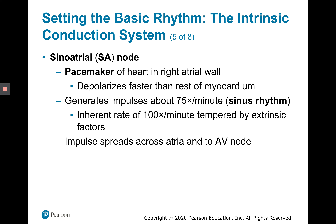What we mean by extrinsic factors is that the nervous system brings down the inherent rate a little bit. Without it, the SA node would fire at about 100 beats per minute. As we leave the SA node, the signal goes not only to the contractile cells but also to other pacemaker cells so they can spread the excitation further. So as we leave the SA node, the spontaneous depolarization moves to the AV node.